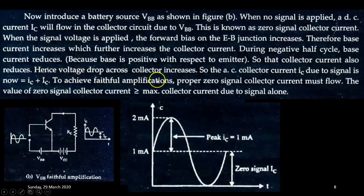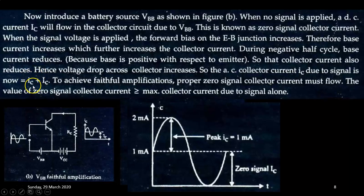Hence, the voltage drop across the collector increases. So, the AC collector current IC due to the signal is now ic plus capital IC, where ic is the current flowing through the collector due to the applied input signal, and capital IC is the DC collector current.